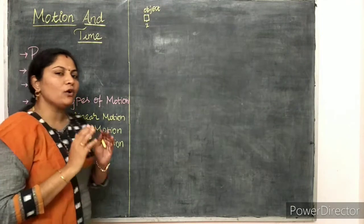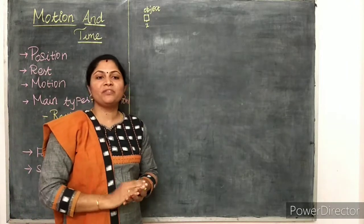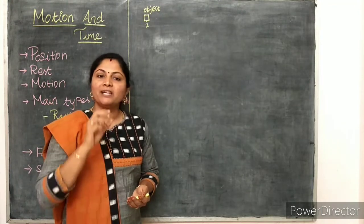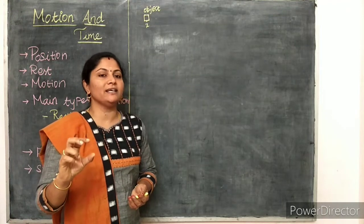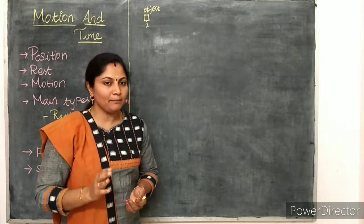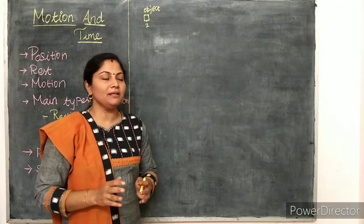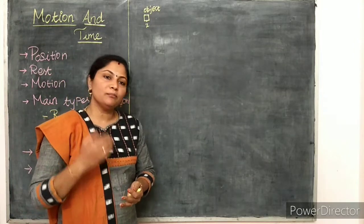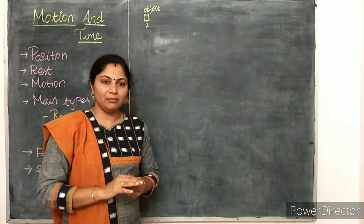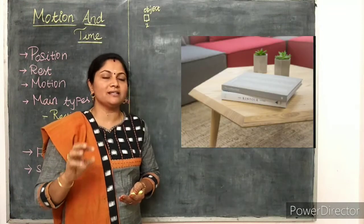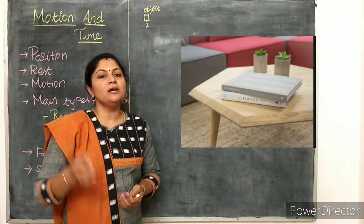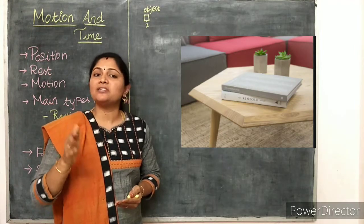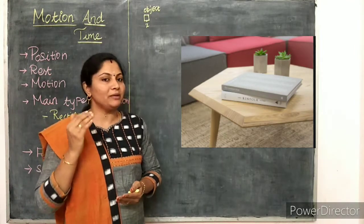Next, rest. If an object does not change its position with respect to time, then that object is said to be at rest. For example, the board in one position will not change with respect to time, so the board is at rest. The book on the table remains in the same position without disturbance — the book is at rest. Position does not change with respect to time; this is said to be rest.